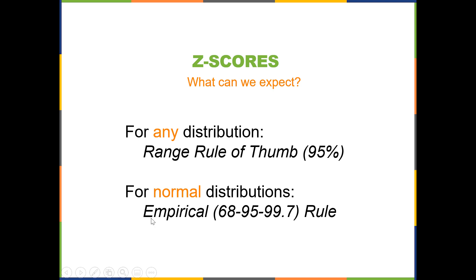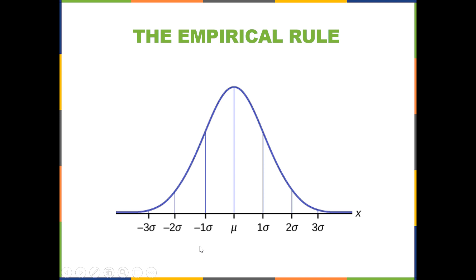And now for the normal distribution, we can use the empirical rule, which is also sometimes referred to as the 68-95-99.7 rule. So with the empirical rule, when you're working with a bell shape, you have more information and it plays out like this.